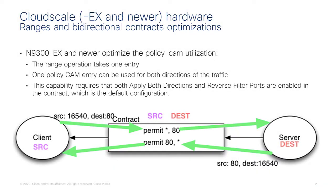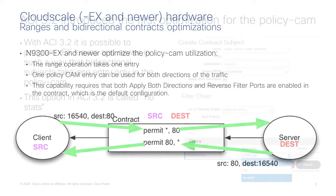Without compression, the policy cam has two entries: permit from any source to port 80, and permit from port 80 to any layer four port destination — to allow traffic to the server and from the server. If you enable compression, ACI programs only one entry, because the hardware just looks up that entry from two different directions for each direction of traffic. Assuming all contracts are bidirectional, you get twice the capacity of the policy cam.